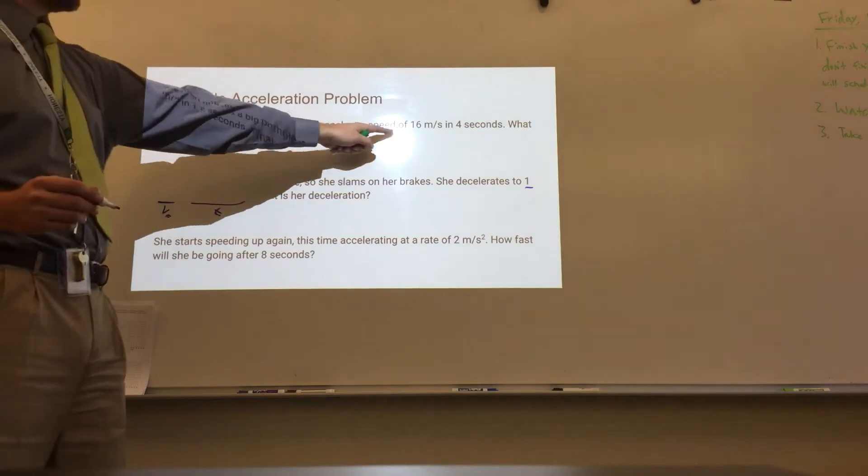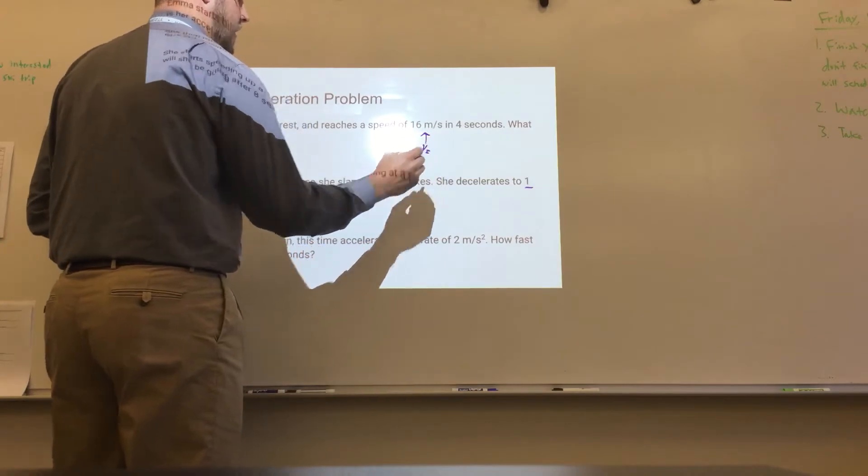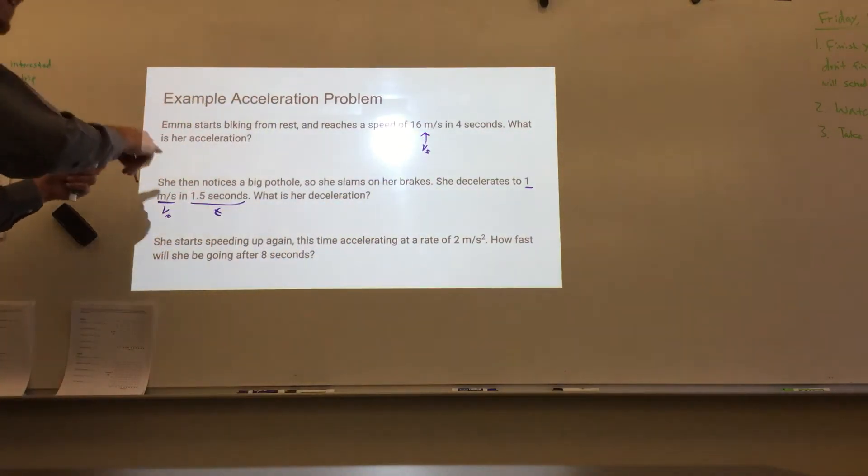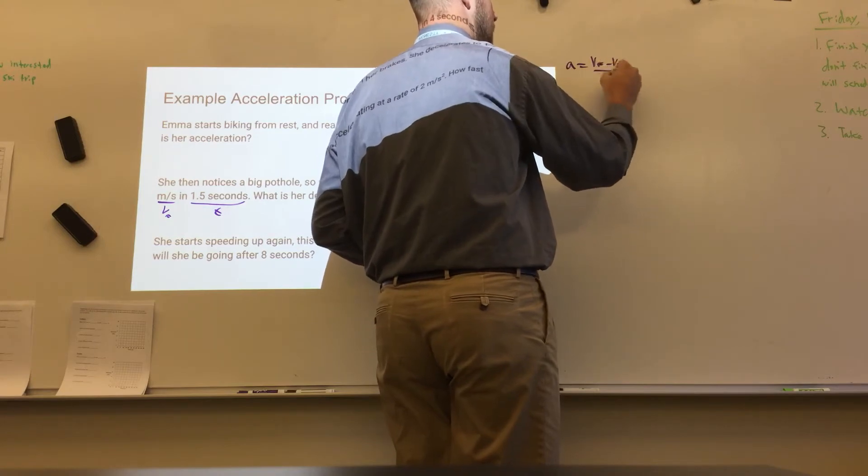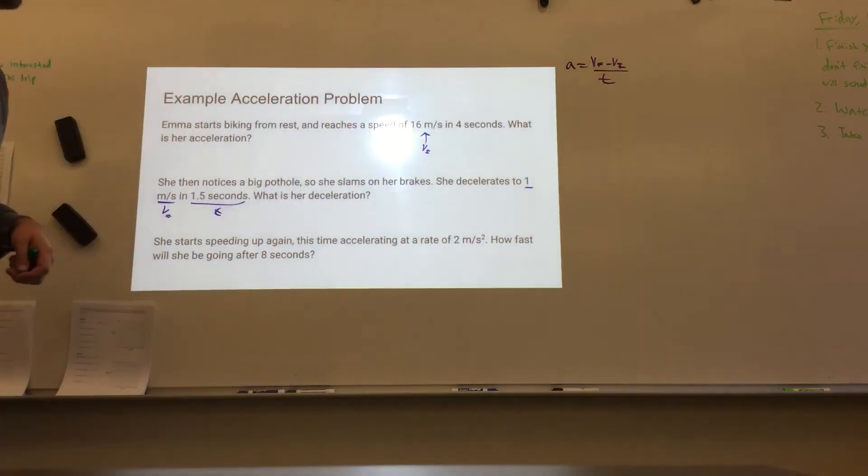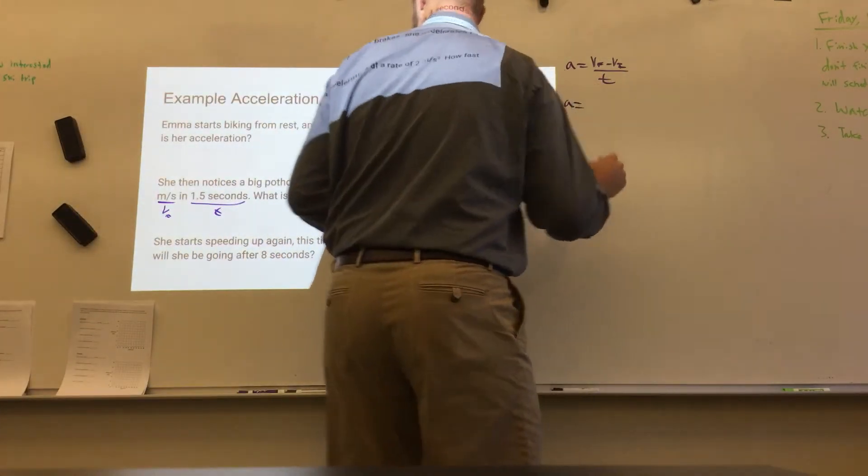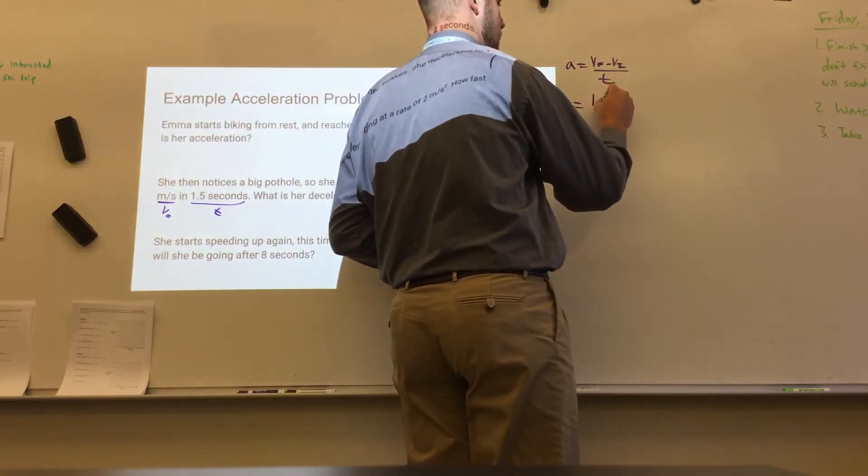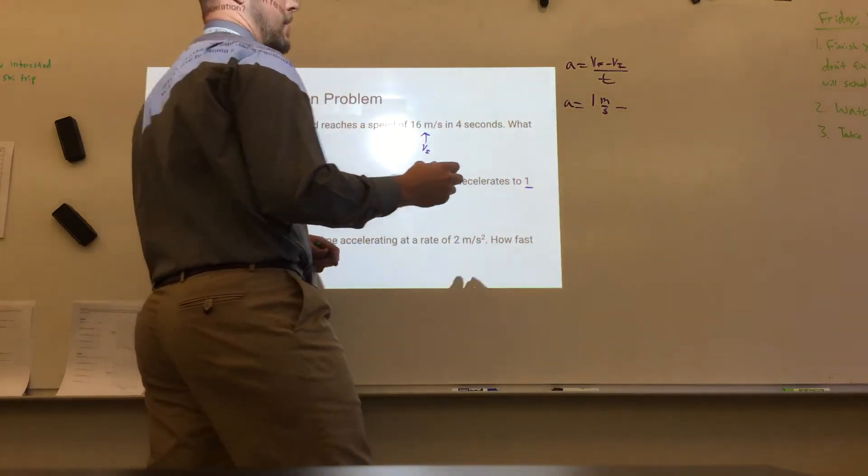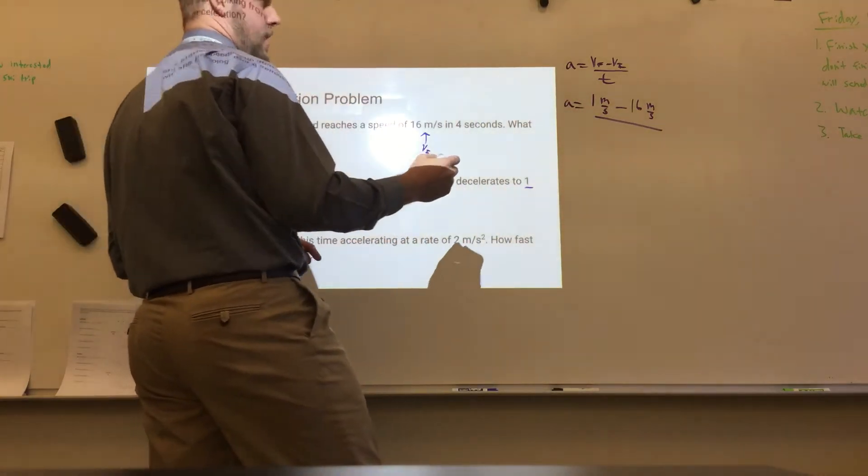She had reached that speed of 16 meters per second, so that is still her, or now that has become her velocity initial in this problem. Notice it was the velocity final in the first part, now it's velocity initial. So, A equals VF minus VI over T. And our acceleration equals VF, that's 1 meter per second, 1 meter per second minus 16 meters per second, divided by time, that was just 1 second.